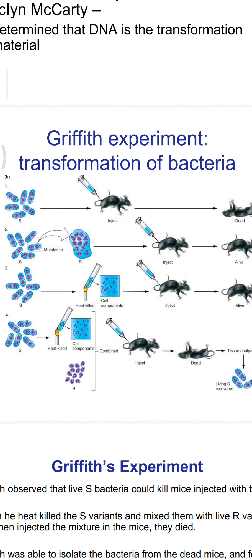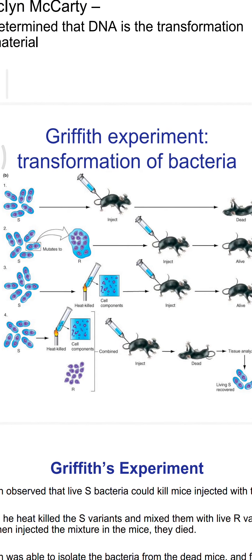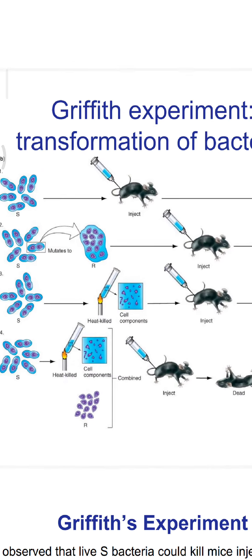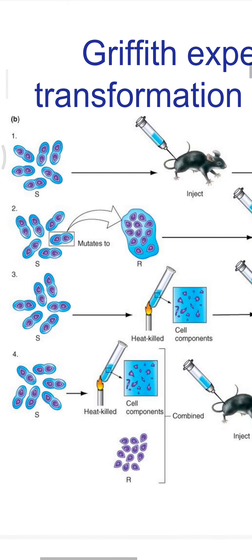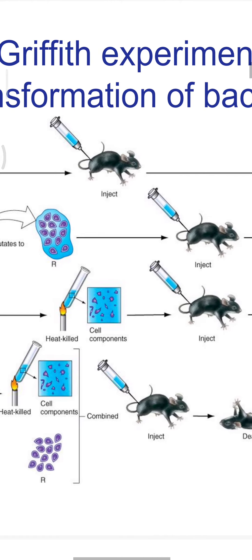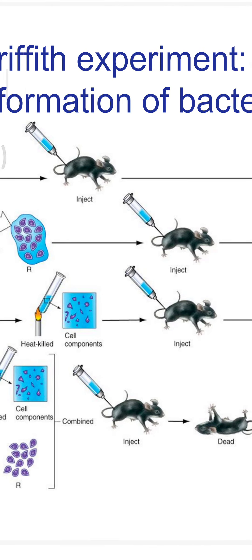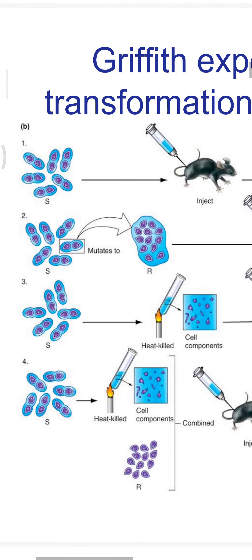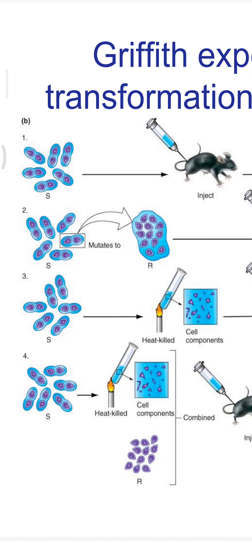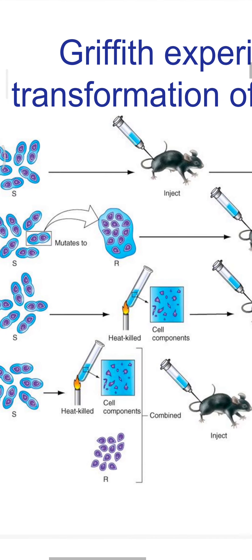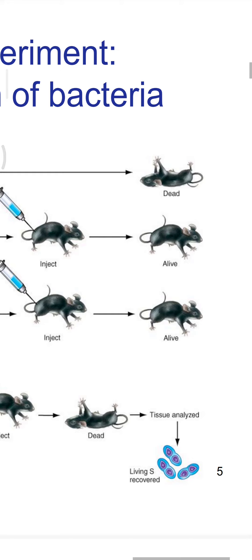The Griffith experiment was about transformation of bacteria. In the first series, one can see how the S strain was injected into mice and it was deadly — the smooth strain was virulent. In the second series, the R strain was injected and the mice survived, as it was alive and non-virulent.